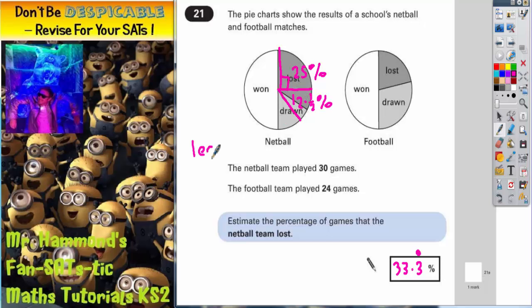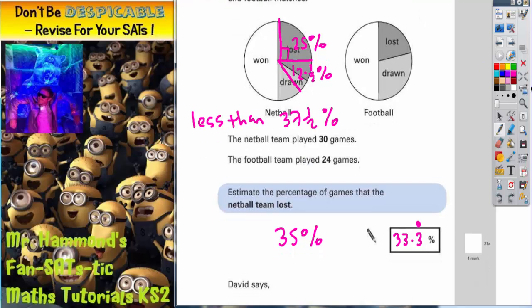So it's got to be less than 37.5%. So another good estimate would be 35%. In truth, what they're probably going to allow in this question is any answer probably between 30% to 37%. If you put any number between those two, you're likely to get the answer right.